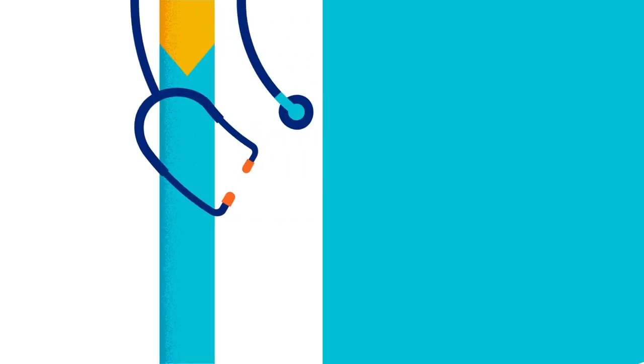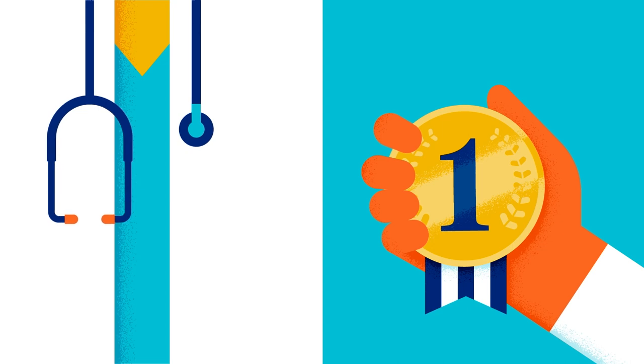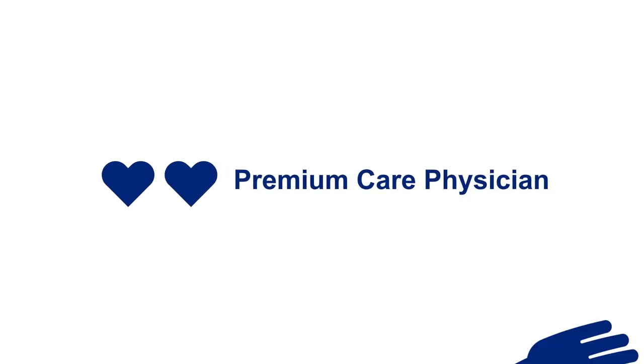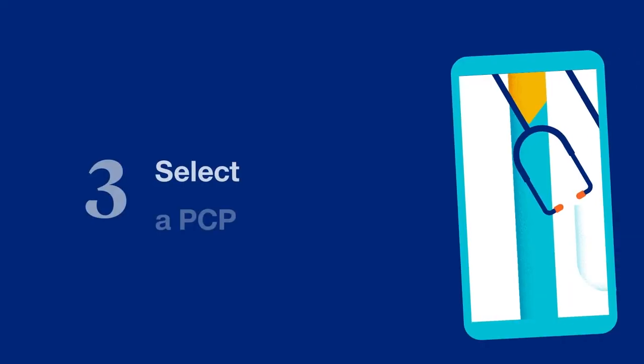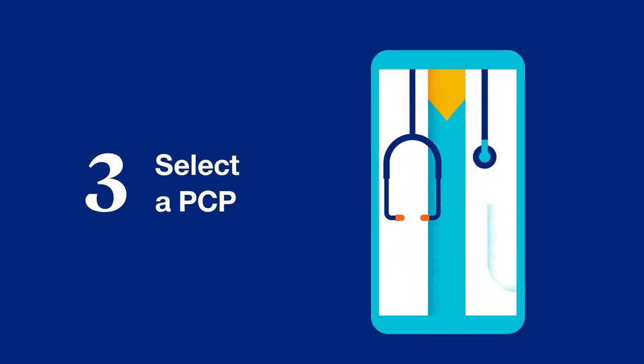Then there are blue hearts, which for those enrolled in health plans like an HMO plan means the provider meets quality and cost-efficiency standards. When you find a PCP that fits your needs, you can move on to the next step: selecting that PCP.